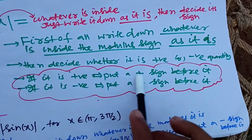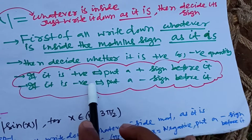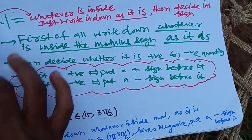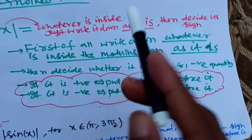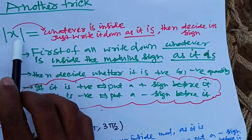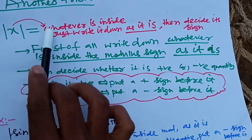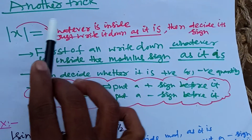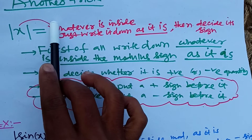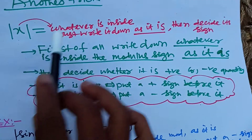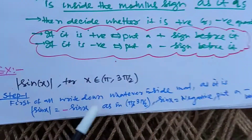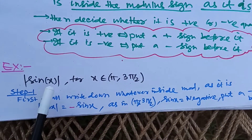So: first step, just copy paste whatever is inside the modulus sign. Second, decide its sign. If it is a positive quantity, put a plus sign before it; if it is negative, put a negative sign before it. That's the whole story. Now let's see an example.